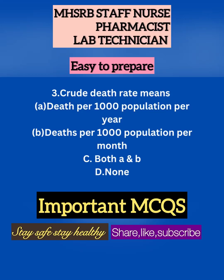Crude death rate means: a) deaths per thousand population per year, b) deaths per thousand population per month, c) both a and b, d) none. Guess the answer — you will be seeing this question in the community. Yes, the answer is a) deaths per thousand population per year. The formula will be: number of deaths divided by total population, multiplied by thousand.